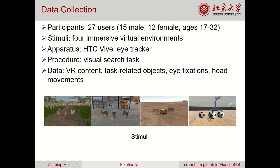In the data collection process, 27 users were asked to perform a visual search task in four immersive virtual environments. Each environment contains three types of objects, and the users were required to search for a particular type of object. We recorded the VR content, task-related objects, users' eye fixations, and their head movements.